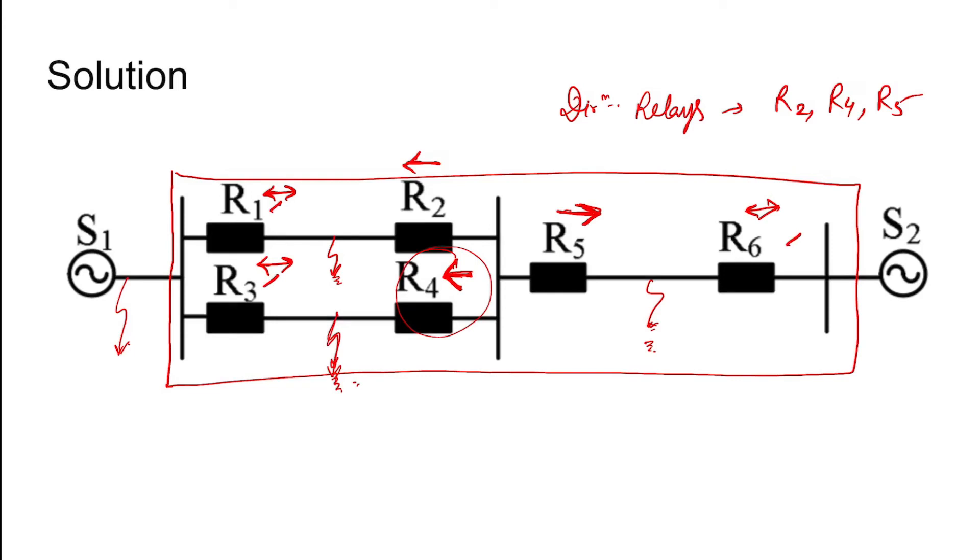And also it can persist by this way from S1 and S2. So to isolate this fault, the backup relay should operate.